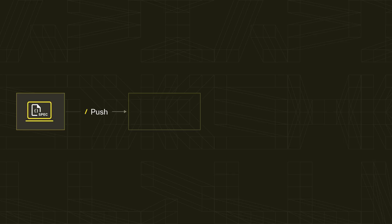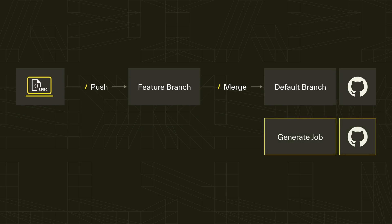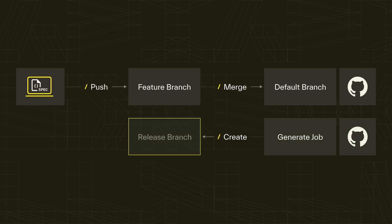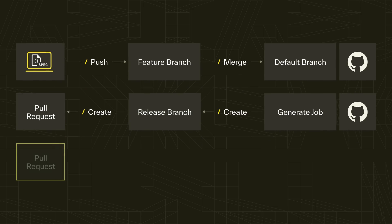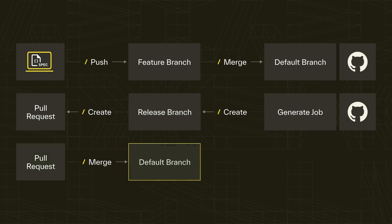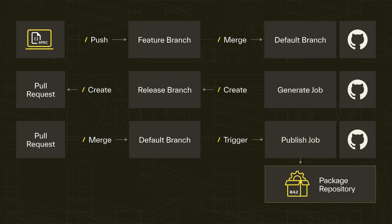With the SDK ready for release, the final step is configuring CI/CD. Here's an overview of the update, generate, and publish process. Updates such as spec changes should use a feature branch workflow or similar for review and testing. Then, once merged into the default branch, the generate job compiles the SDK into a release branch and creates a pull request. Finally, the release branch is merged into the default branch, triggering the publish job and pushing the release to the package repository.